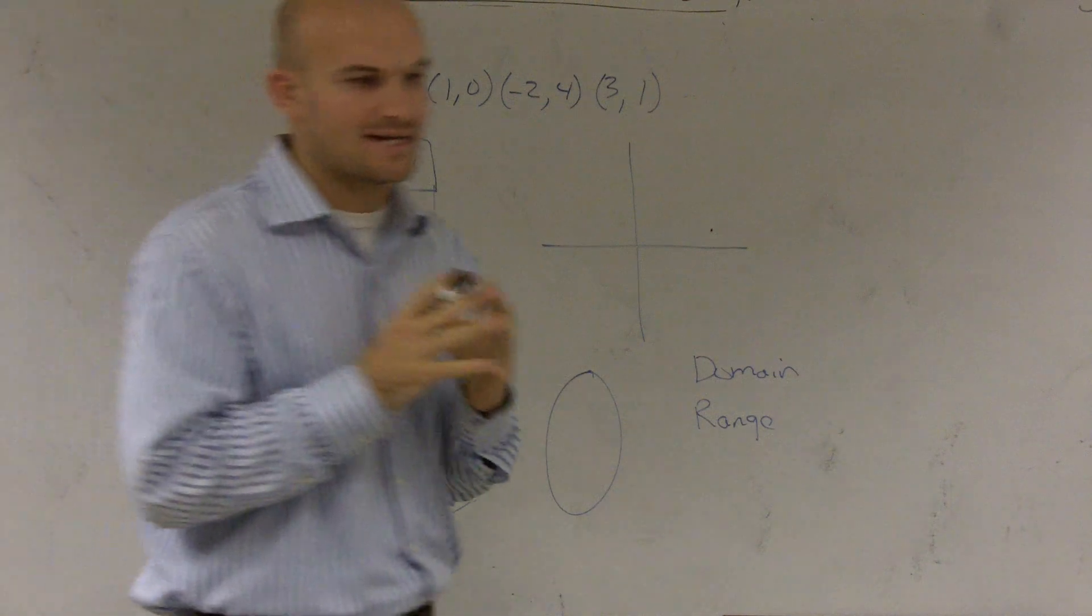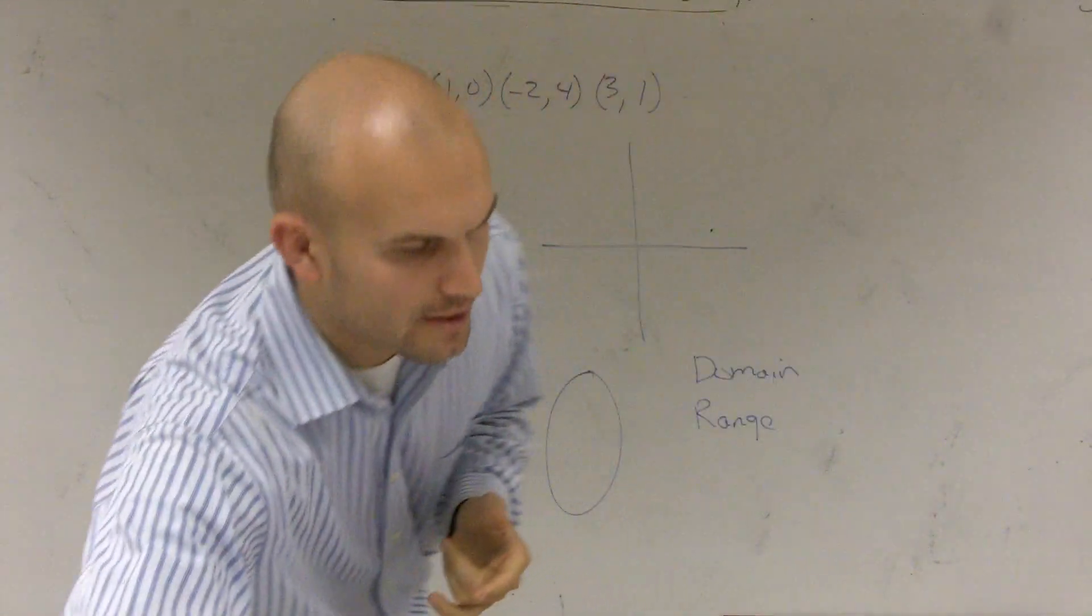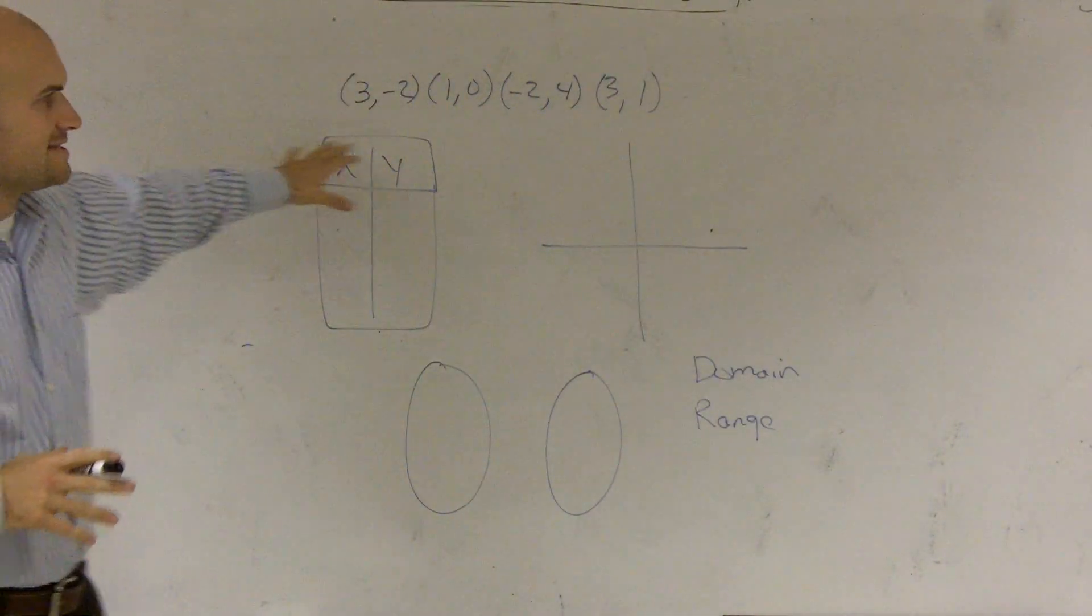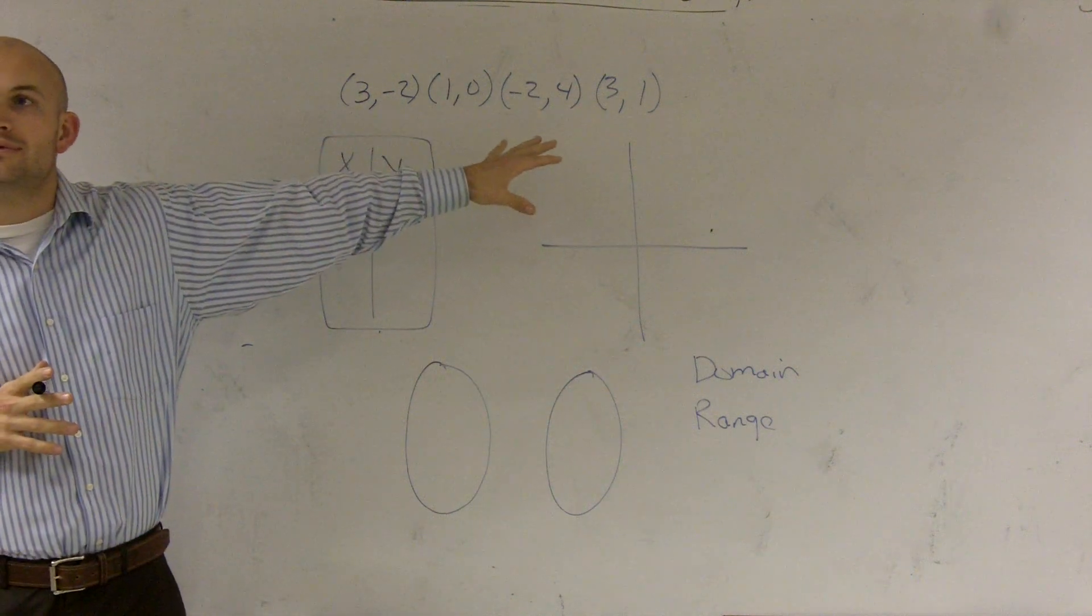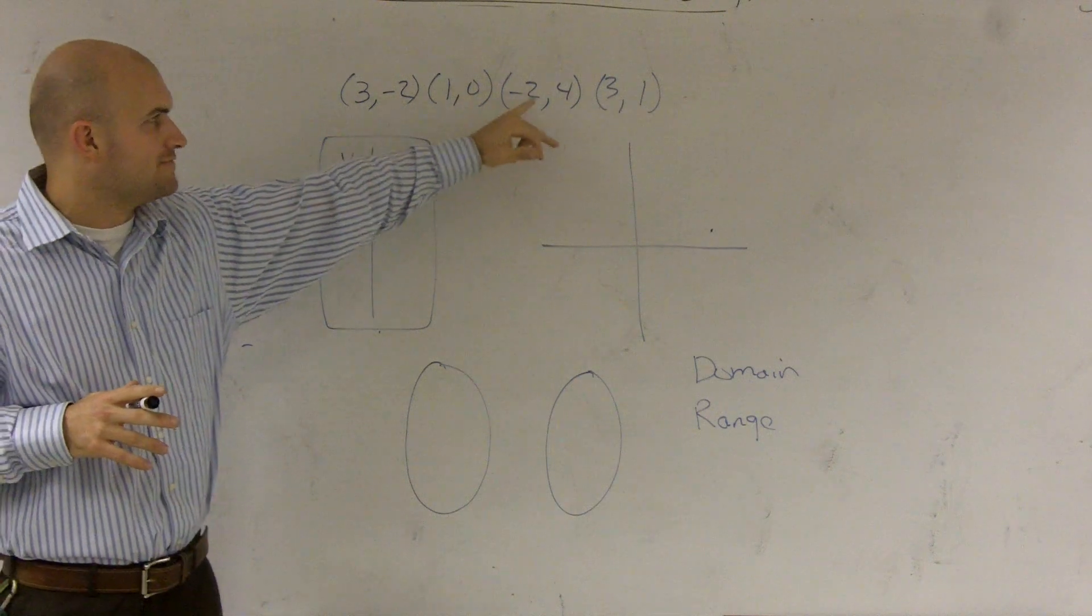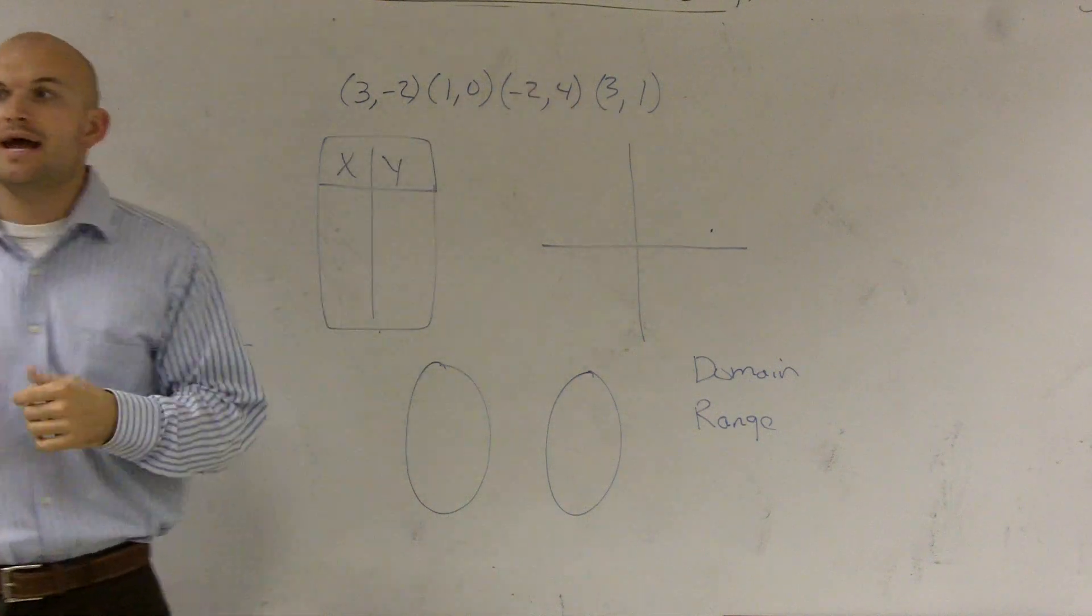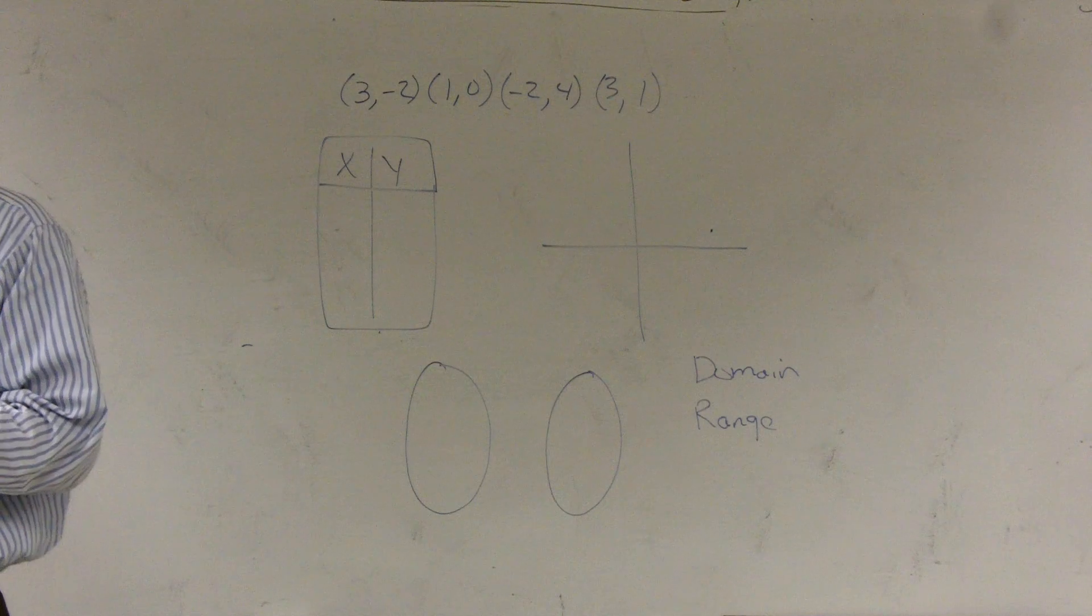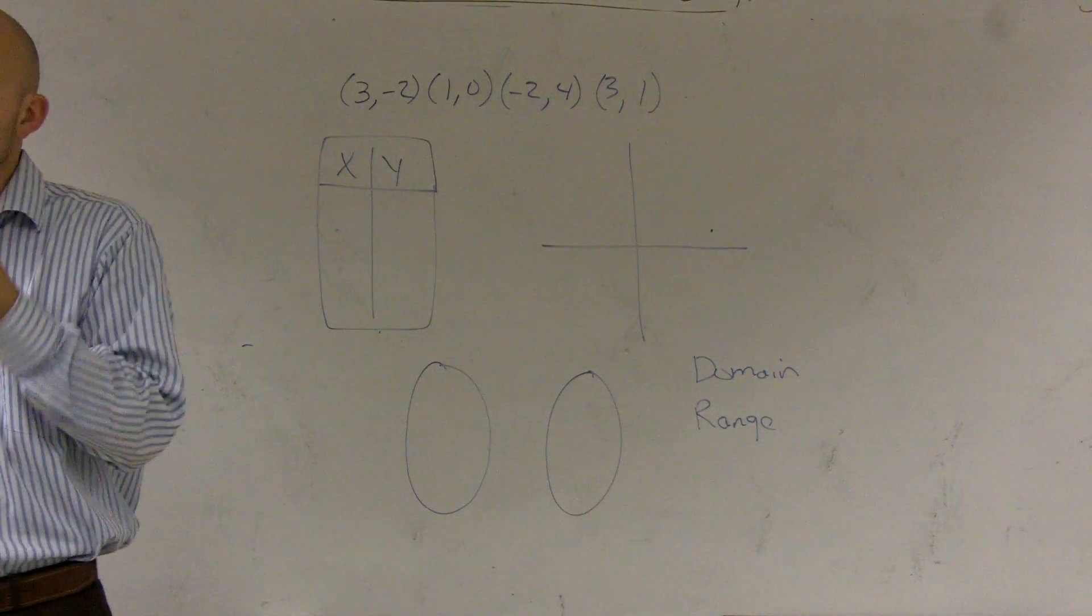What we're going to do for this problem is take these set of points - 3 comma negative 2, 1 comma 0, negative 2 comma 4, 3 comma 1 - and put them in certain types of relations. We want to represent them in certain types of relations.